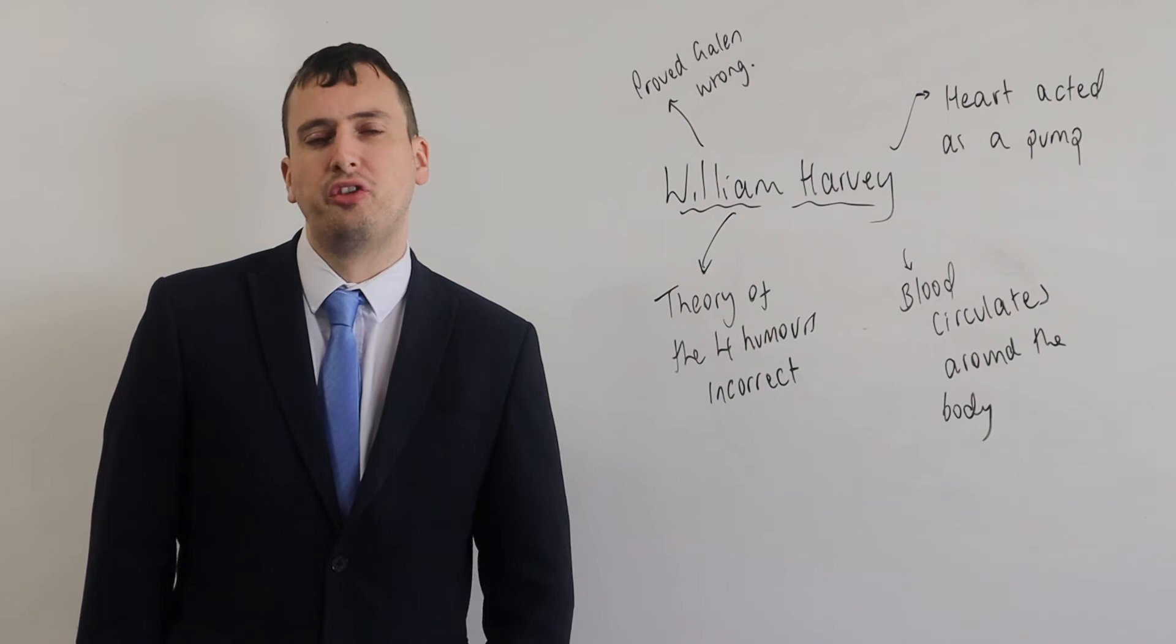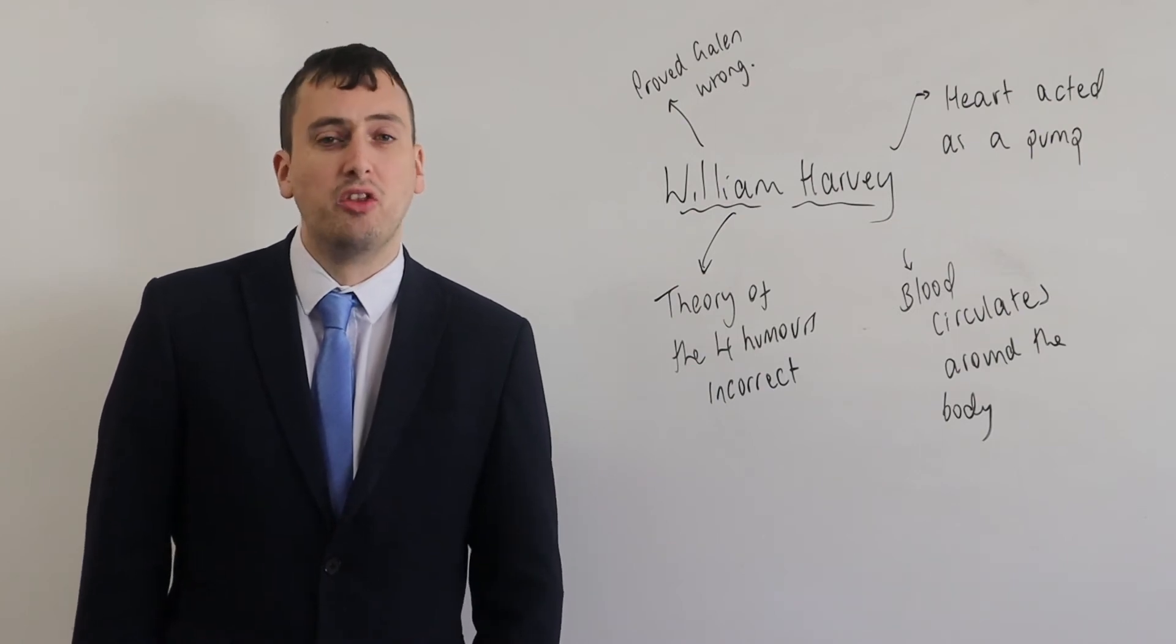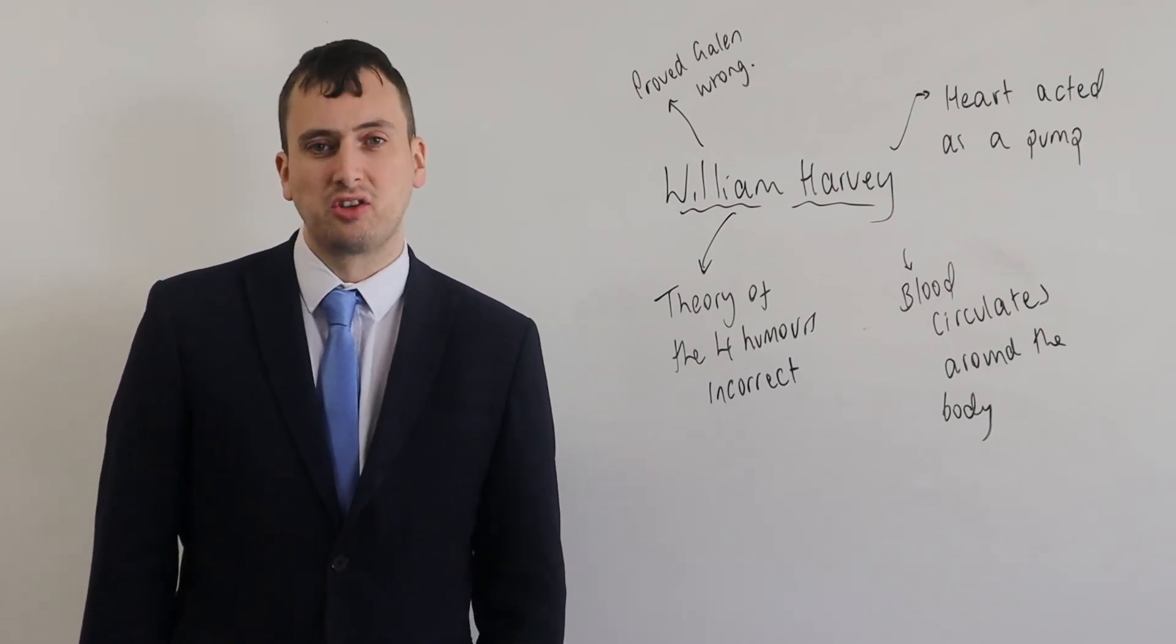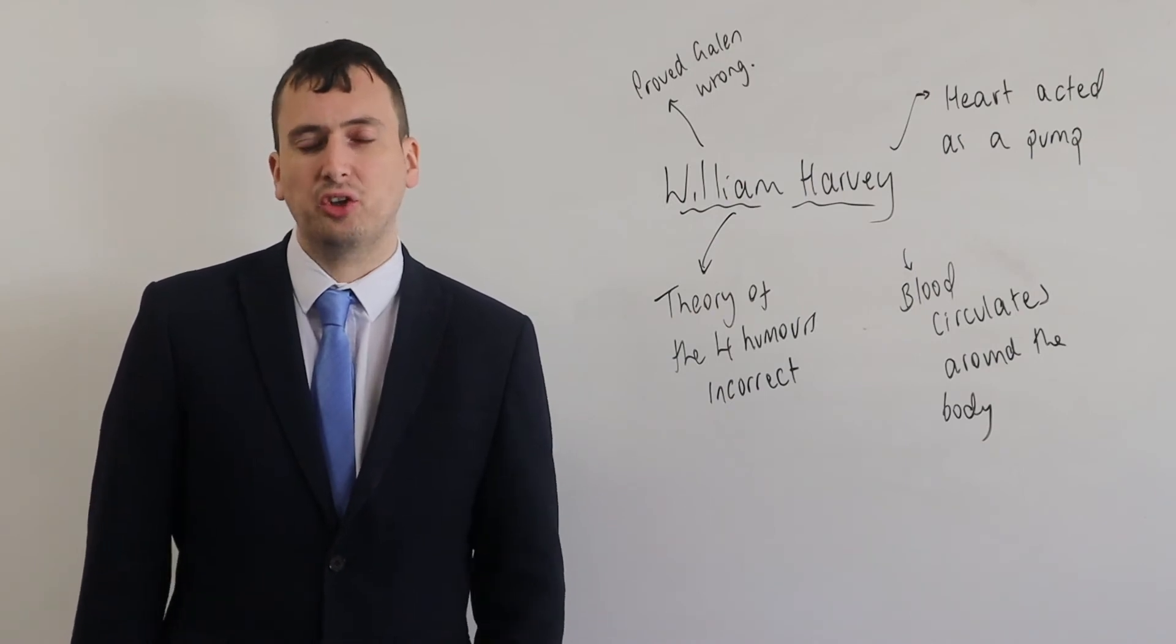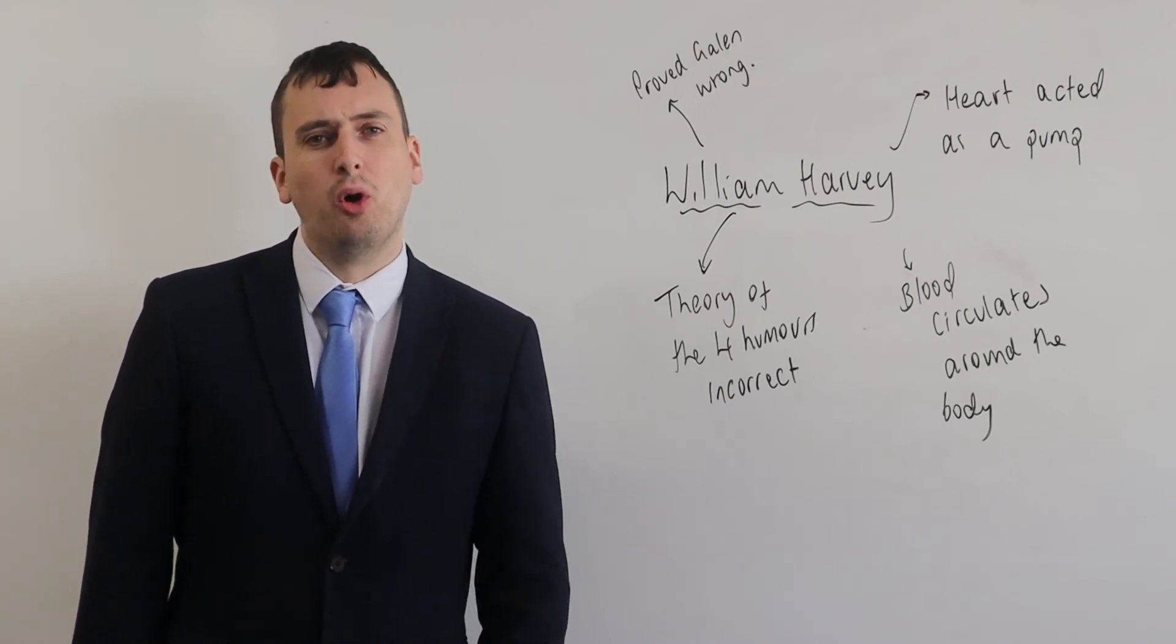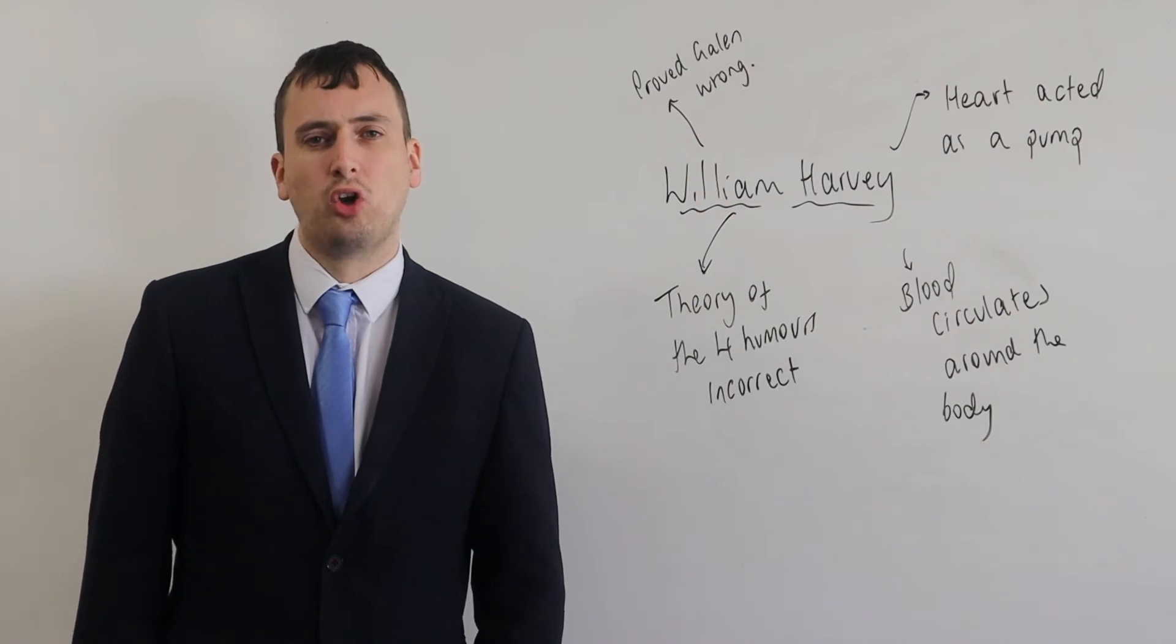Harvey did this by conducting four different types of experiment. The first two types of experiment were dissection. Harvey dissected human bodies to get a good understanding of human anatomy but also conducted experiments on cold-blooded animals.